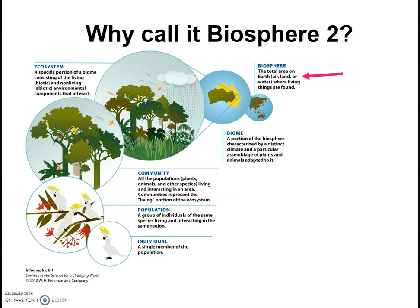Here in Infographic 8.1, you can see that the term Biosphere is also used in the hierarchy of terms that ecologists and other biologists use to describe the different levels of biological organization. A group of the same species of organisms living in the same place at the same time is called a population. All the populations living in the same area at the same time make up the community. The community plus the nonliving environment makes up an ecosystem. Then, large distinct ecosystems determined by climate and identified by the predominant vegetation and organisms that have adapted to live there are called biomes. And at the top, all the biomes on Earth make up the area on Earth where living things are found — the biosphere.